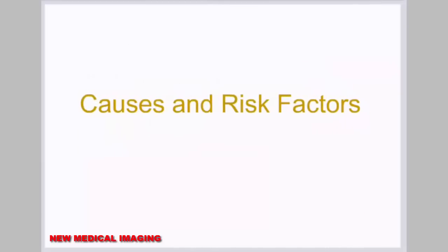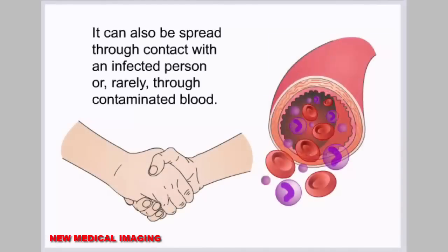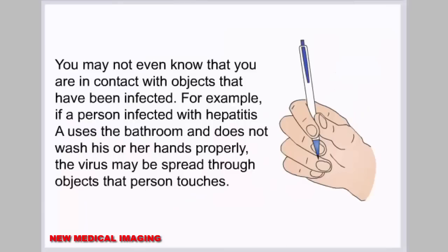Hepatitis A can be transmitted in several ways. Usually it is transmitted through contact with a small amount of infected feces. It can also be spread through contact with an infected person, or rarely through contaminated blood. You may not even know you are in contact with objects that have been infected — for example, if an infected person does not wash their hands properly after using the bathroom, the virus may spread through objects they touch.